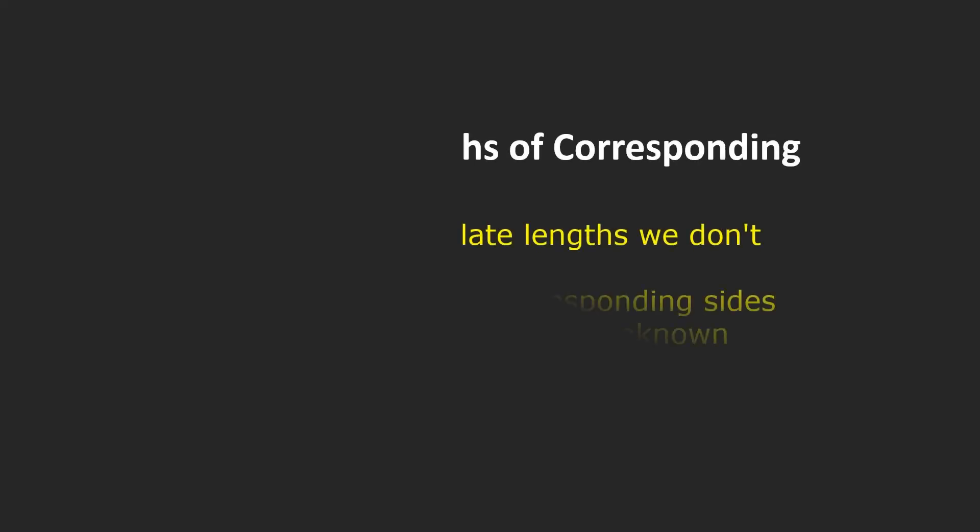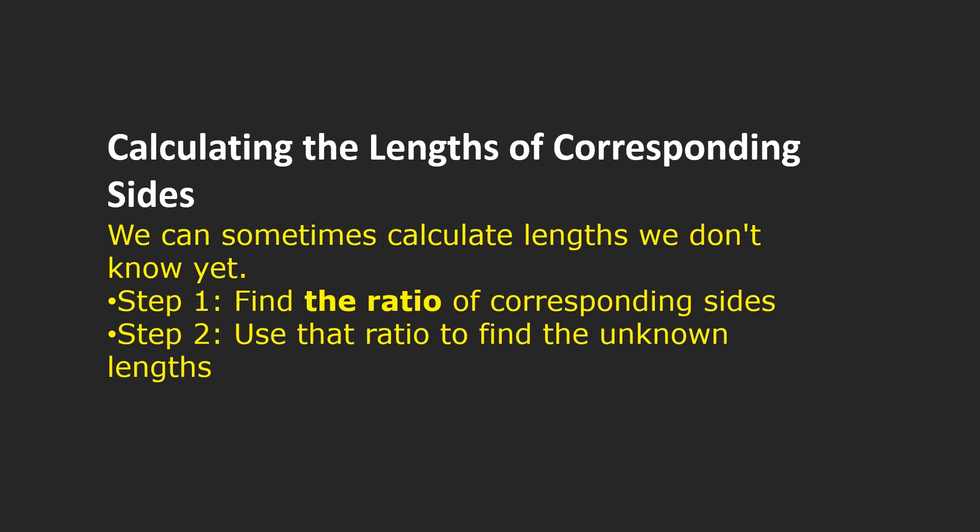Using the concept of similarity of triangles, we can calculate the lengths of the corresponding sides. We can calculate unknown lengths using the ratios of corresponding sides. The two steps are: Step 1, find the ratios of corresponding sides; Step 2, use that ratio to find the unknown lengths. Using the concept of similarity of two triangles, we can find the unknown lengths given in the triangle.